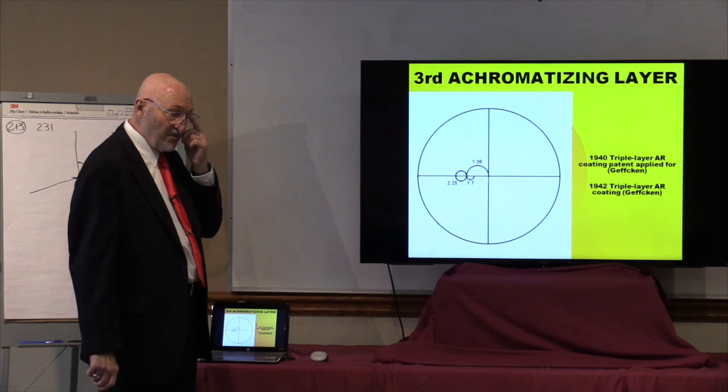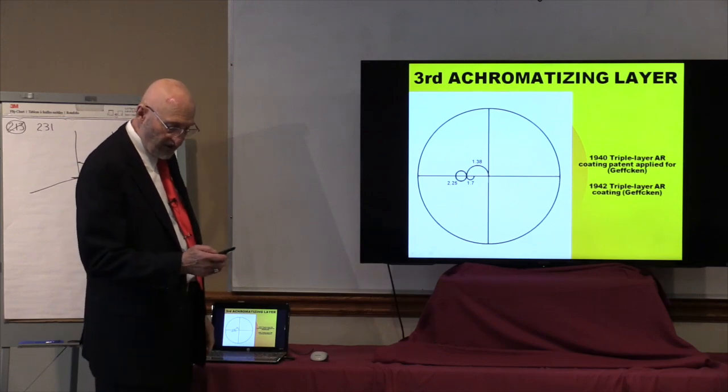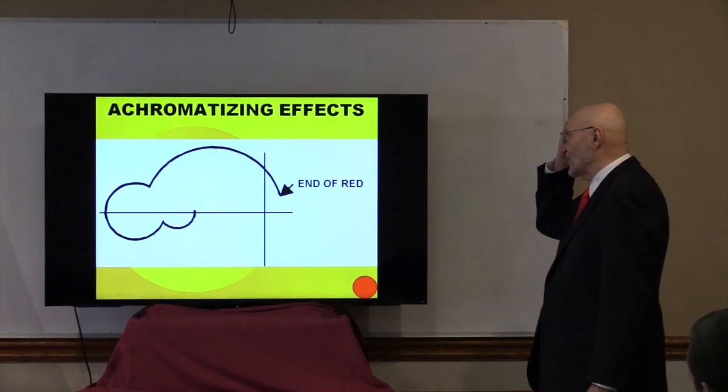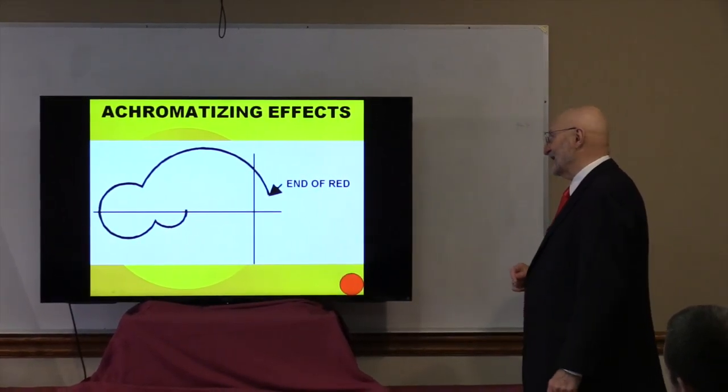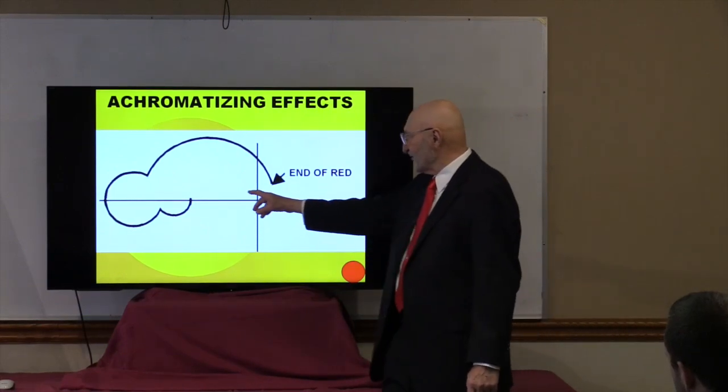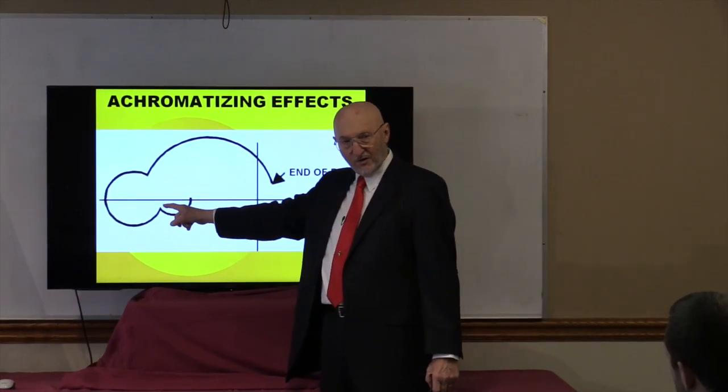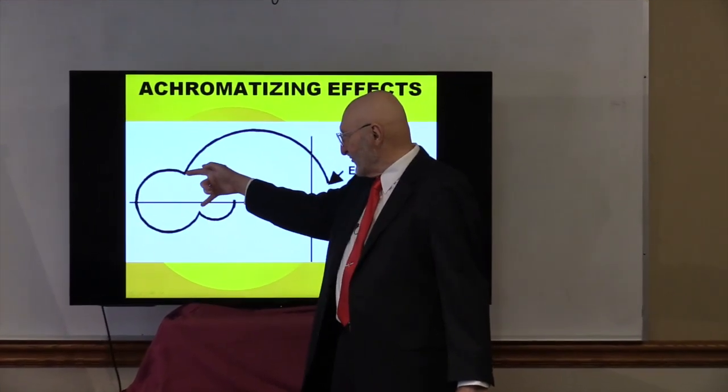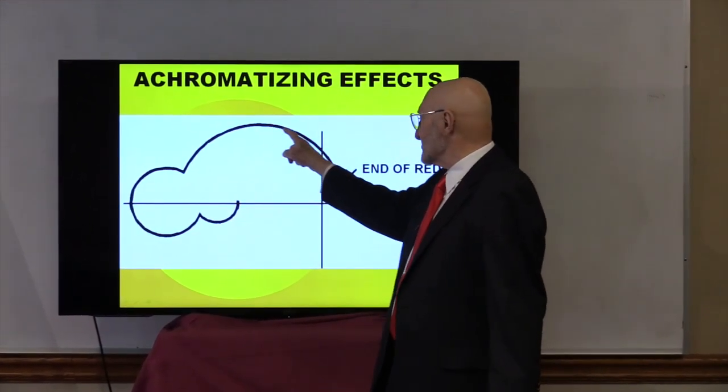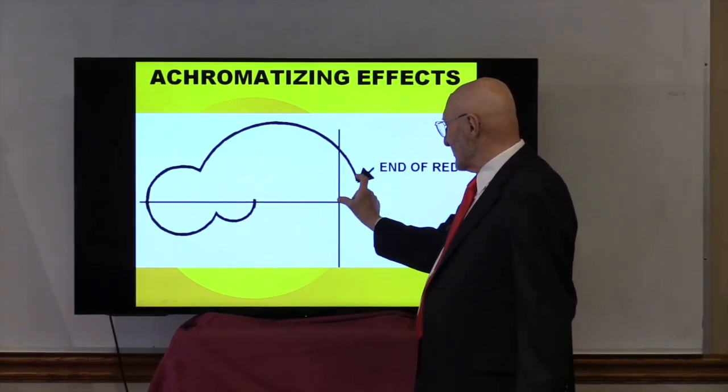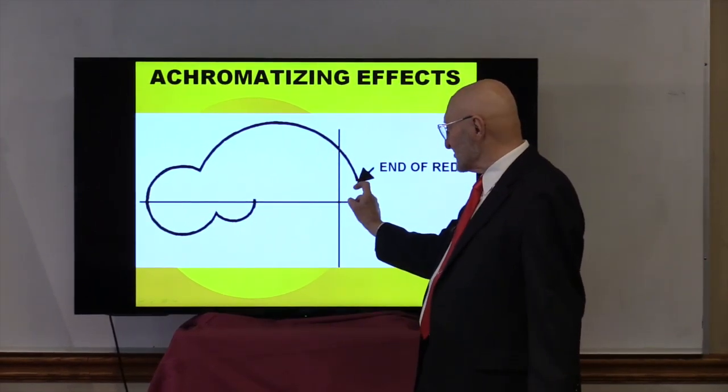Now this would be what happens at the red end of the spectrum, in that the first layer is short of a quarter wave, the second layer is short of a half wave, and the third layer is a short quarter wave. And as it turns out, this is staying fairly close in here.